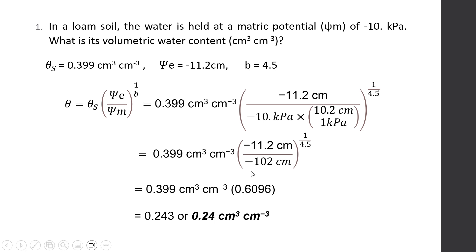Take note that in the problem, we're using two sig figs. Therefore, the answer should be reduced into two sig figs. So we have the volumetric water content of this loam soil at a matric potential of minus 10 kPa is 0.24 cubic centimeter per cubic centimeter.